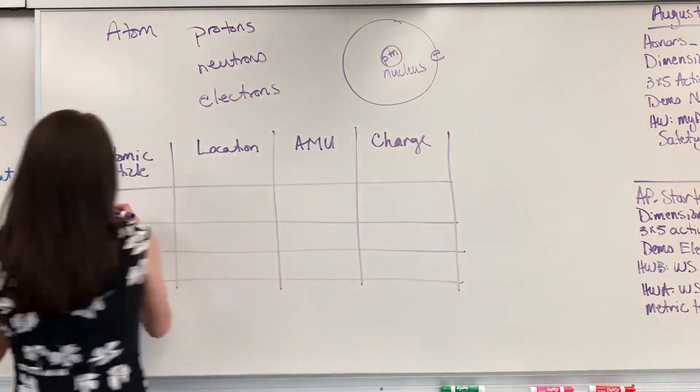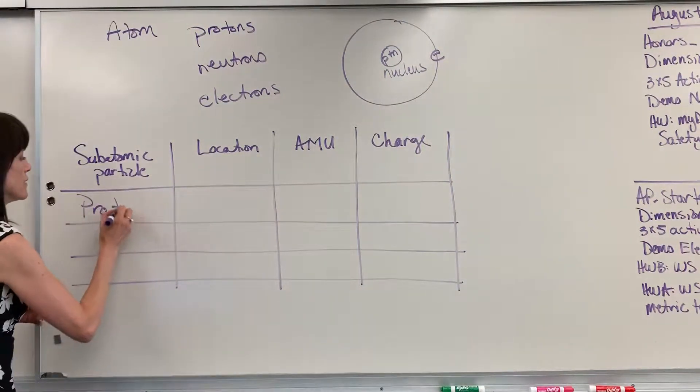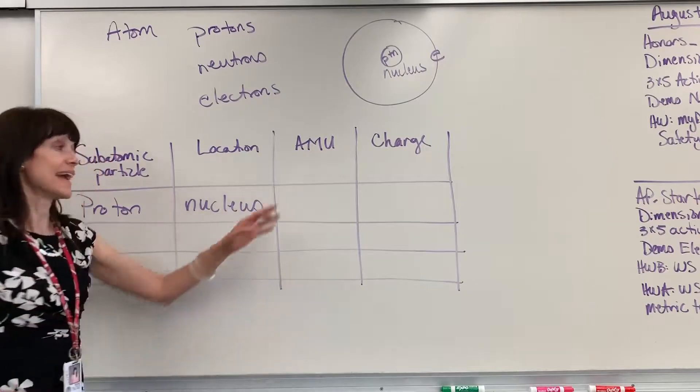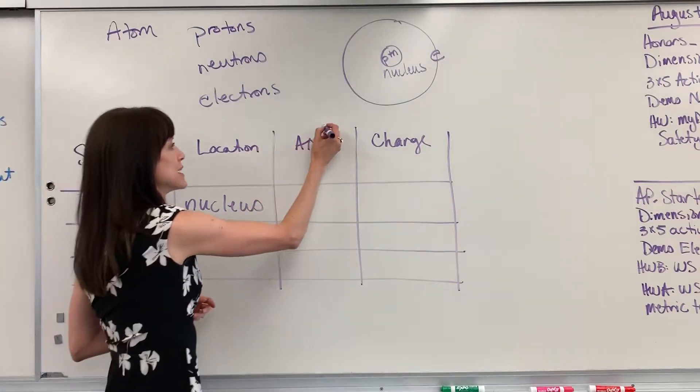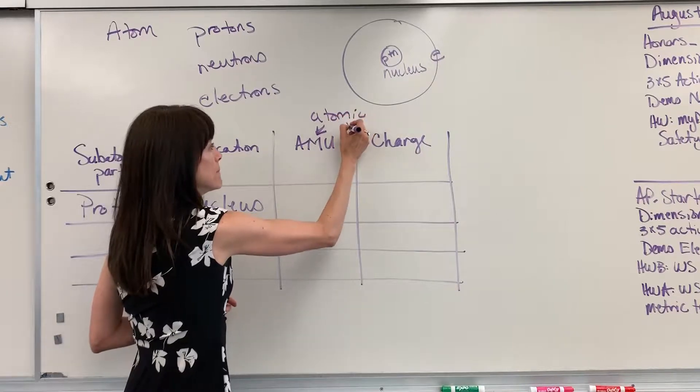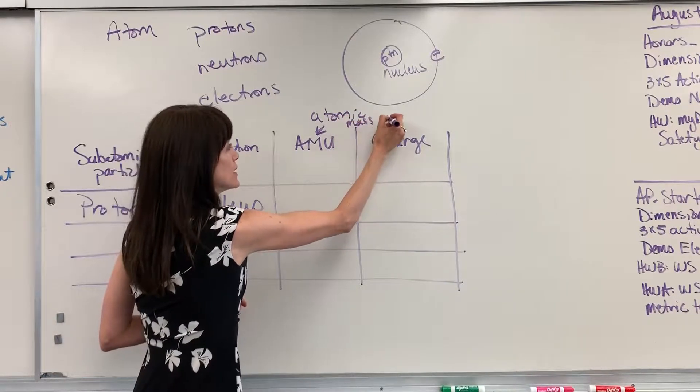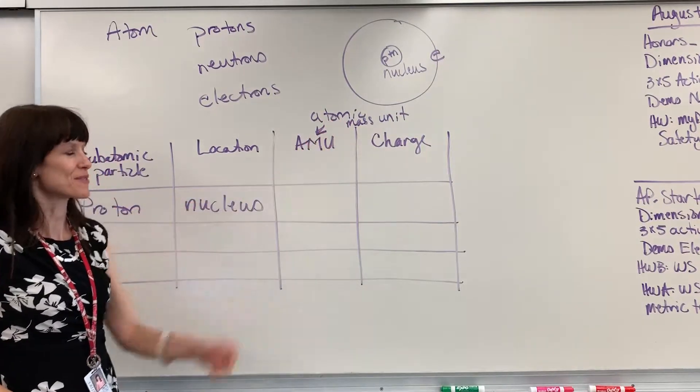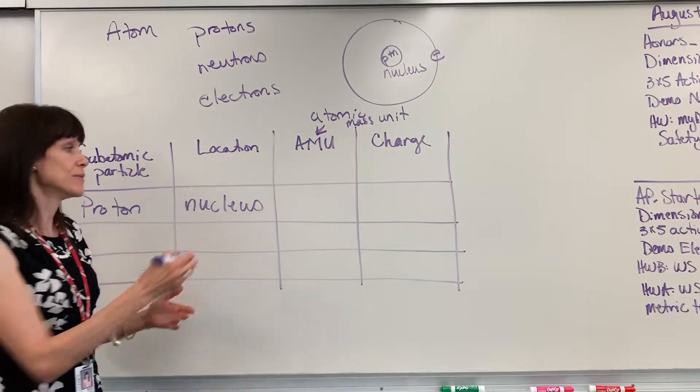Now some details on these. For a subatomic particle, the proton is located in the nucleus, and its amu—amu stands for atomic mass unit, and I have a different video to explain where this comes from—the proton's amu is one, one amu.